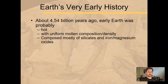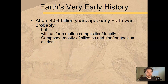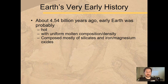It was composed mostly of silicates and iron and magnesium oxides. Silicates end up making a lot of rocks that are on the surface now — granites and things like that. And iron and other heavy metals are more so what the core and inner workings of the Earth are composed of.